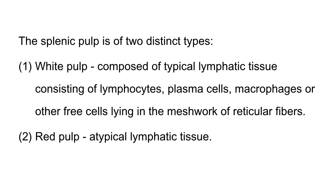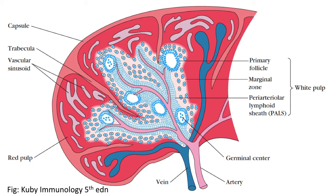The red pulp is basically atypical lymphatic tissue and is majorly involved in the restriction of the RBCs — the old and the defective RBCs. So the structure of the spleen includes the red pulp, where old, damaged, and defective RBCs are removed, and the white pulp.